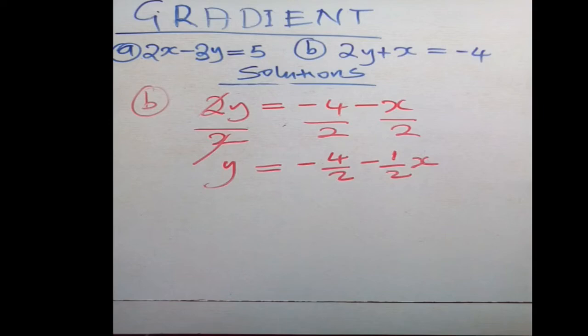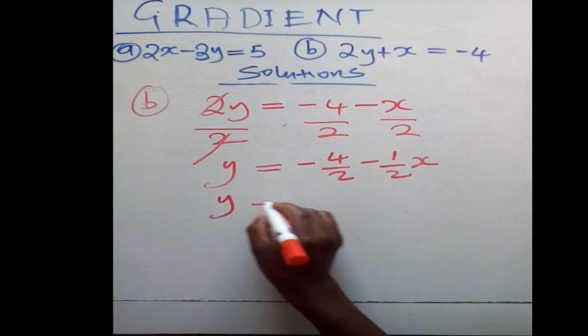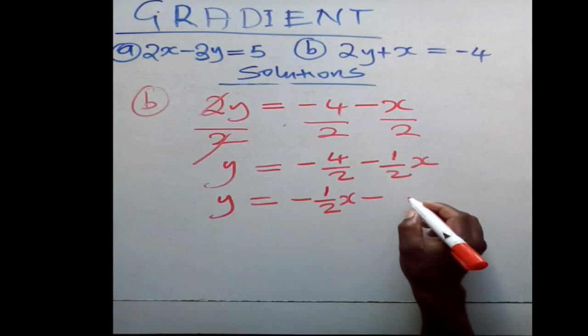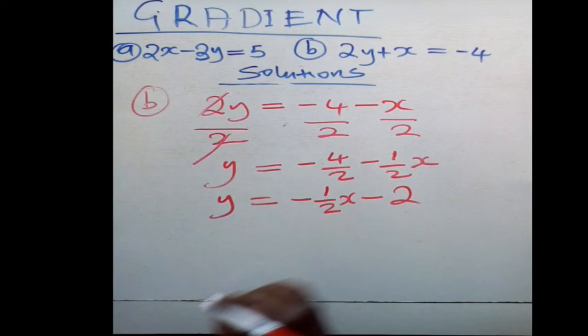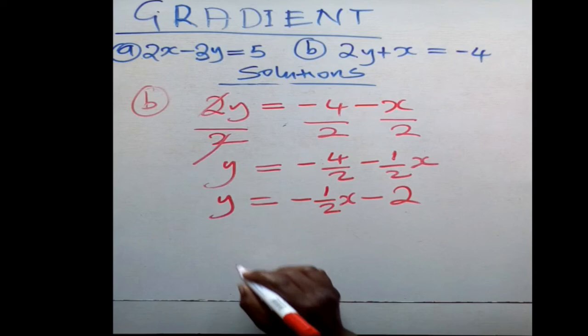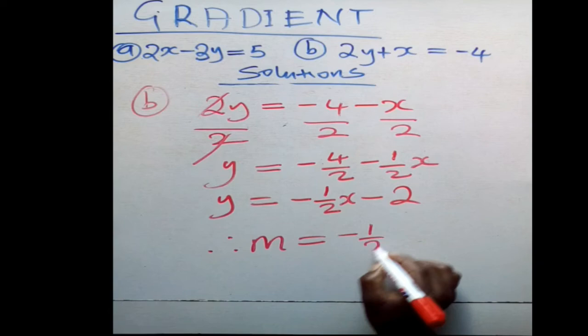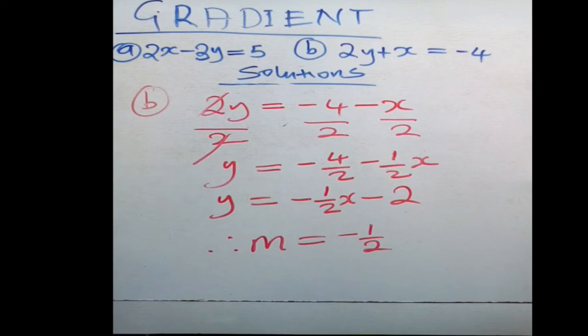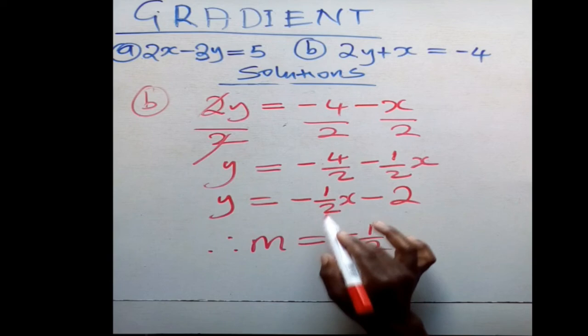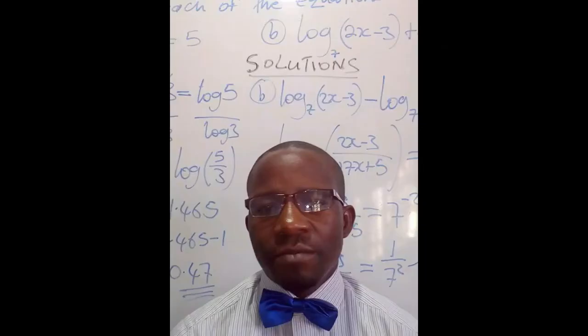Rewriting the equation gives y = -(1/2)x - 2, since -4/2 = -2. At this point we have expressed y in the form y = mx + c. The coefficient of x is the gradient, so m = -1/2. Make sure you pick the coefficient together with its negative sign and it will be marked as correct.